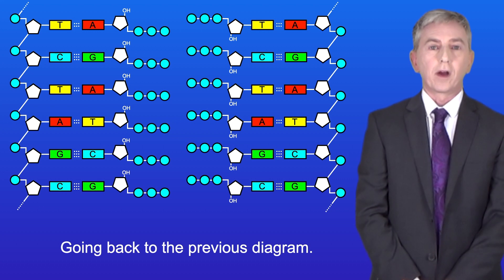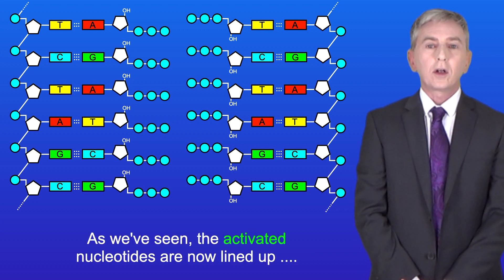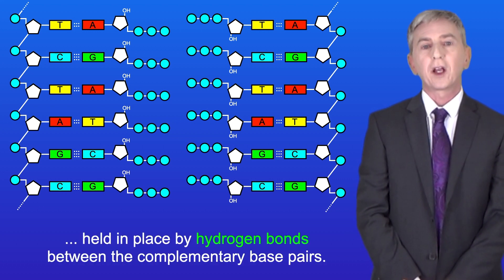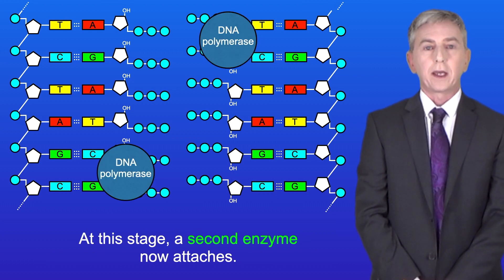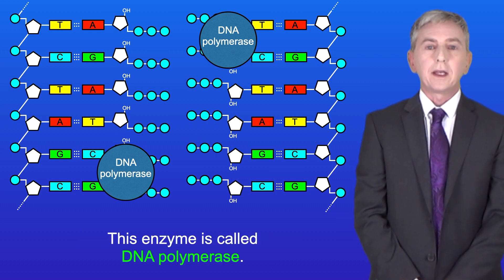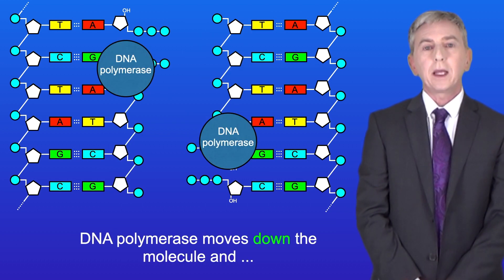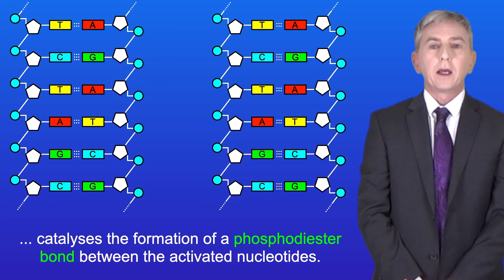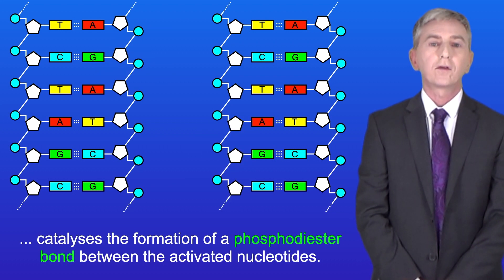Okay going back to the previous diagram, as we've seen the activated nucleotides are now lined up held in place by hydrogen bonds between the complementary base pairs. At this stage a second enzyme now attaches. This enzyme is called DNA polymerase. DNA polymerase moves down the molecule and catalyzes the formation of a phosphodiester bond between the activated nucleotides. And remember that this is an example of a condensation reaction.